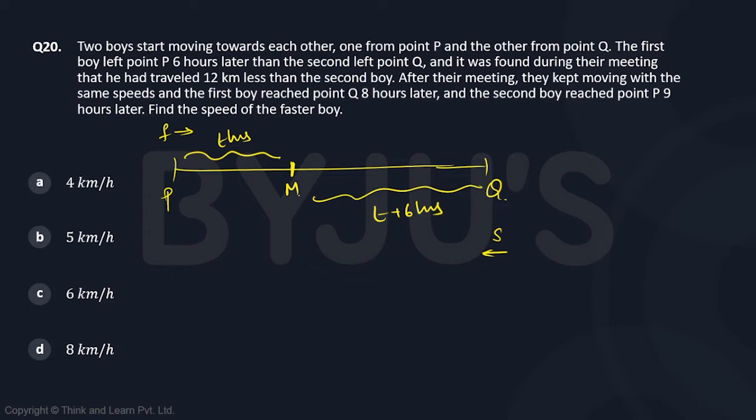And it is also given that at their meeting point, the first guy traveled 12 kilometers less, which means this distance, if I say x, then this distance will be x plus 12. He traveled 12 kilometers less. So if it is x here, then x plus 12 will be the other distance.